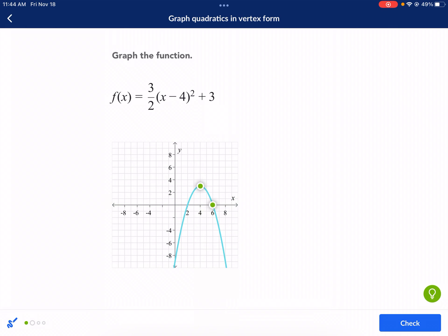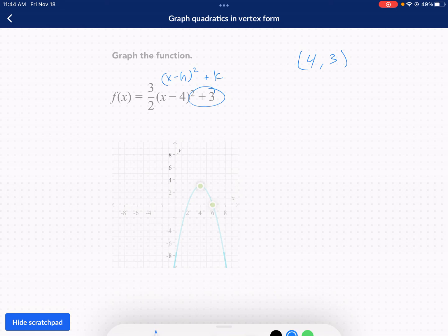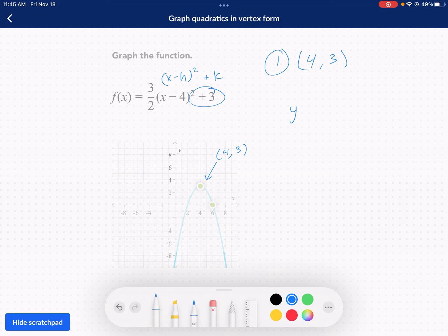That's 4, 3 right there. Now I need to find my y-intercept. That's my second step. So step 2, I need to find my y-intercept. I need to know what y equals when x equals 0. So I'm going to go 0 minus 4 squared plus 3.